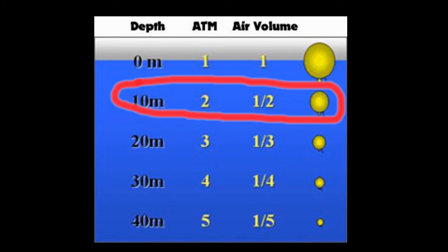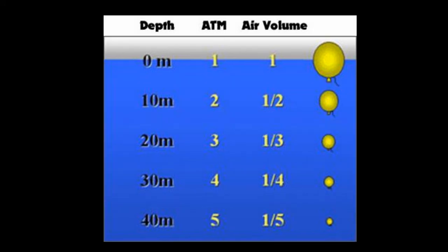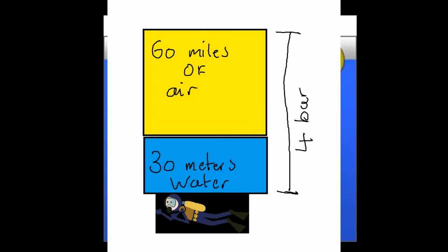So at 30 meters there is 4 bar pressure. Because we have got 3 bar of pressure above us plus the bar of atmospheric pressure pressing down on the water as well. So that gives us a total of 4 bar pressure.